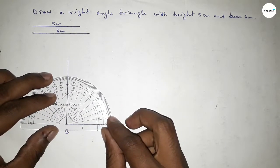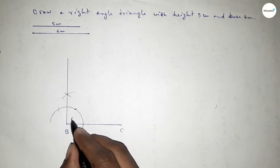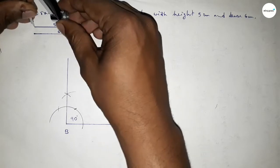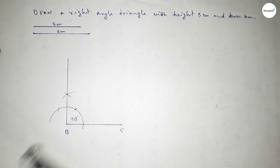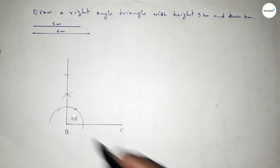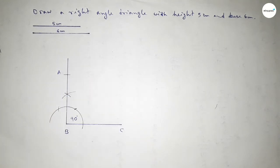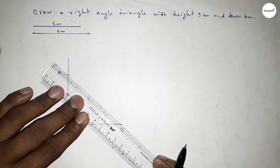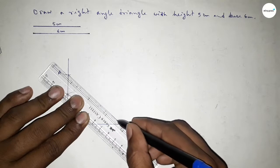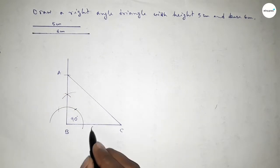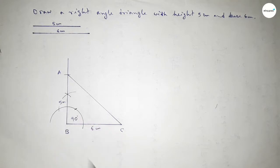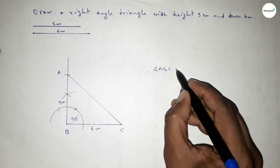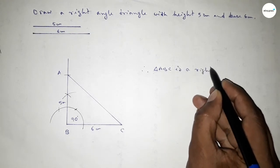Joining this side gives us a 90-degree angle. Checking — this is perfectly 90 degrees. Now taking the length of 5 centimeters with the compass and marking point A. Joining A and C to get triangle ABC, where side BC is 6 centimeters and side AB is 5 centimeters.